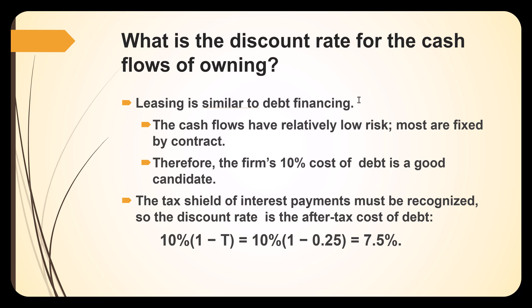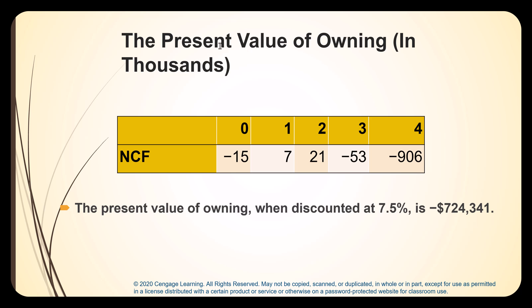Since leasing is very similar to debt financing, the cash flows carry relatively low risk — mostly fixed by contract. The firm's after-tax cost of debt is a good discount rate, which here is 7.5%. Discounting all the ownership cash flows (starting with a negative outflow at time zero) at 7.5%, the present value of owning this asset is negative $724,000.